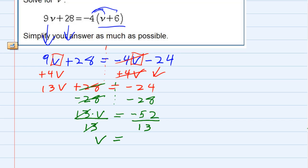And on the right hand side, negative 52 divided by 13 gives me negative 4. So we have solved for v. And we can check it—if we plug it back in for v here and here, we should get a true statement.